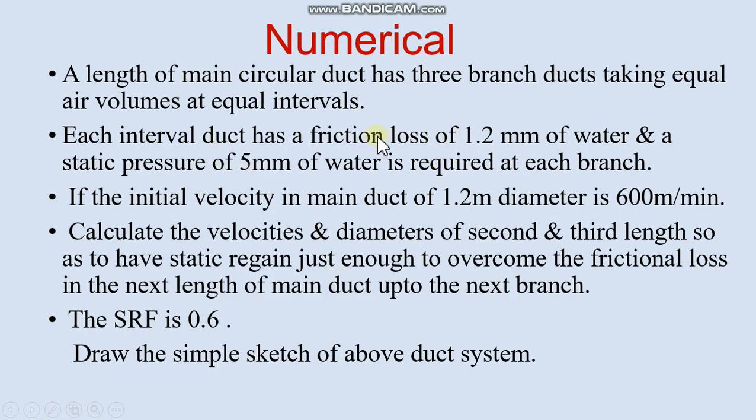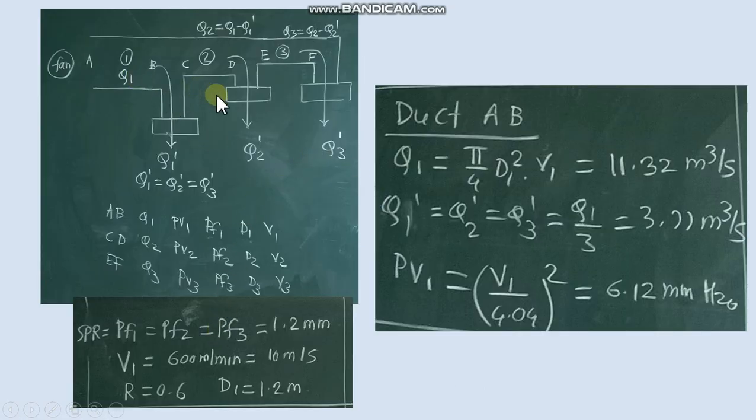In the numerical we are given friction loss in different branches 1.2 mm and static pressure at end 5 mm. Velocity in main duct and diameter main duct is given. Static regain factor is given. So let us see from the sketch.